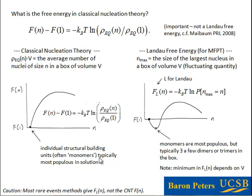Because the monomers are the most populous in solution, the minimum occurs at the free energy for N equals 1. From there, you see a smaller population of dimers, yet smaller population of trimers, tetramers, etc., all the way up until you reach the least common nucleus size — and that is your critical size. This is really how we interpret the free energy in classical nucleation theory.